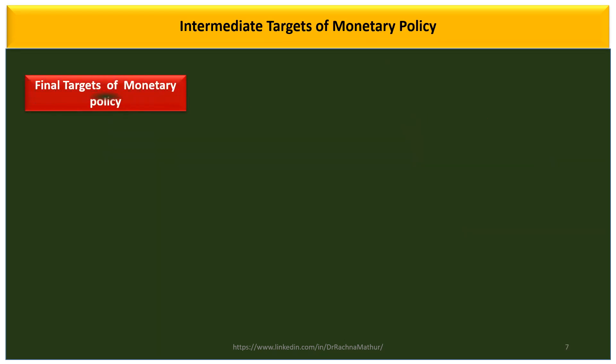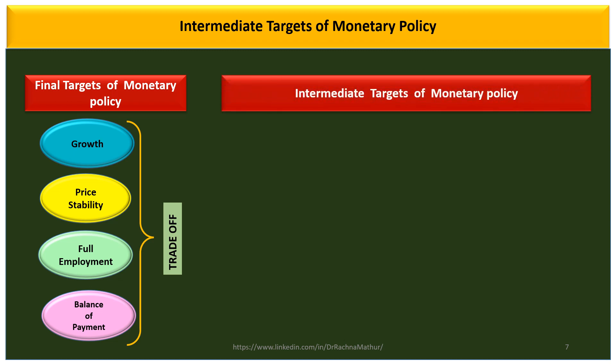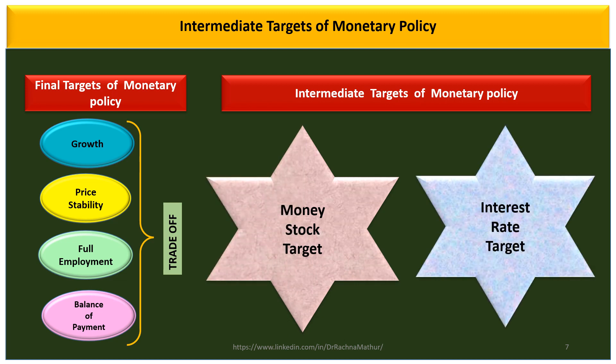So from the previous discussion, we have seen that there is a problem of policy lag in monetary policy transmission, and there are trade-offs between the final targets of monetary policy. In order to avoid these problems, policymakers suggest targeting the intermediate targets of monetary policy — specifically the money stock target and the interest rate target.